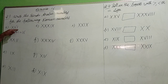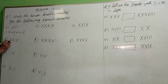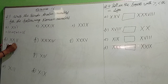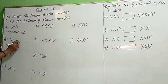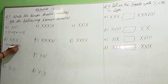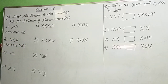XVI equals 16. Next is XX followed by I. X represents 10, again 10, and I means 1. So 10 plus 10 is 20, plus 1 is 21, plus 1 is 22. Understand?